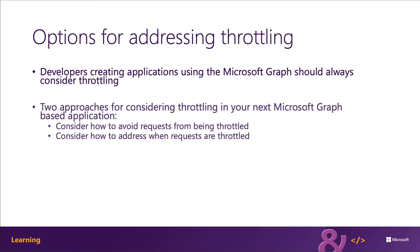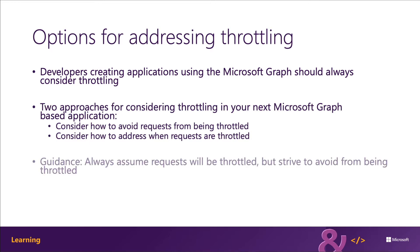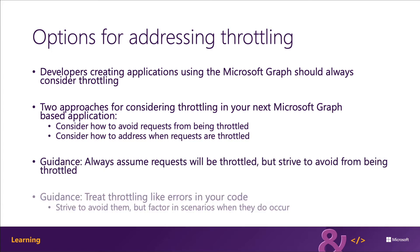First, consider avoiding scenarios where requests could be throttled. Avoiding the issue completely is always the best approach. The application should also assume that while developers try to avoid throttling situations, it still may happen. And as such, the application should address what happens in those cases. The application should always assume the request will be throttled, and developers should do what they can to avoid hitting those throttling limits.